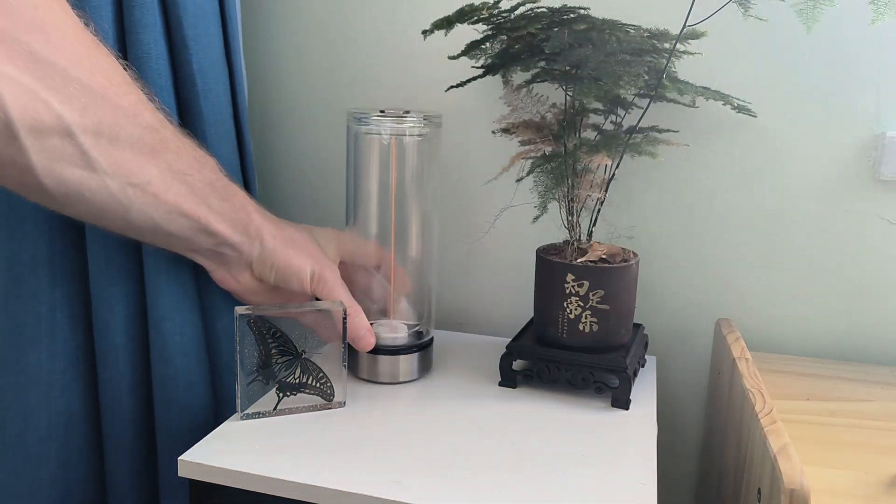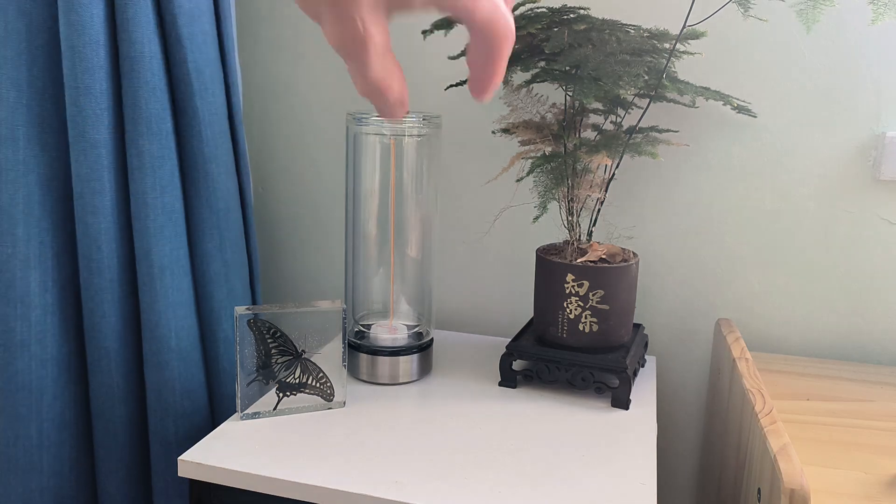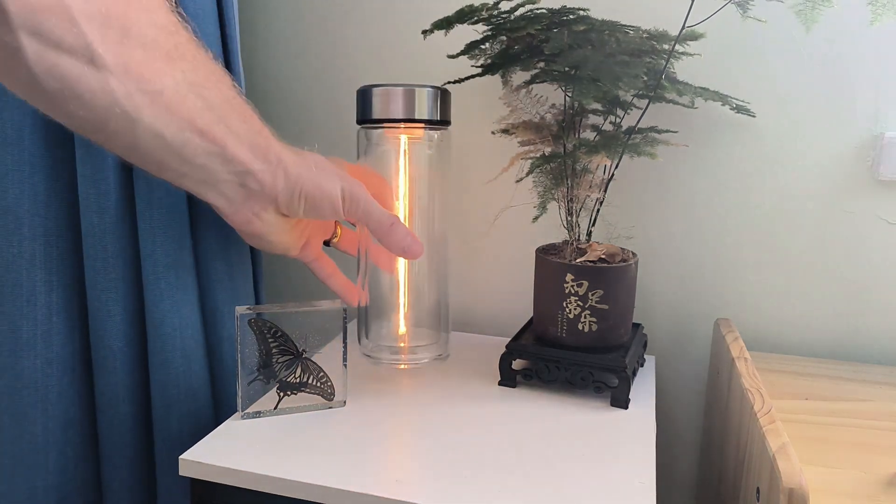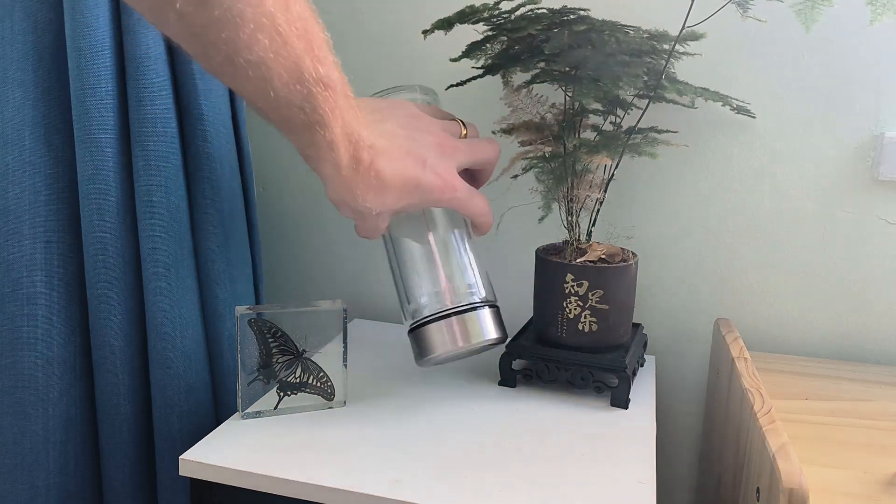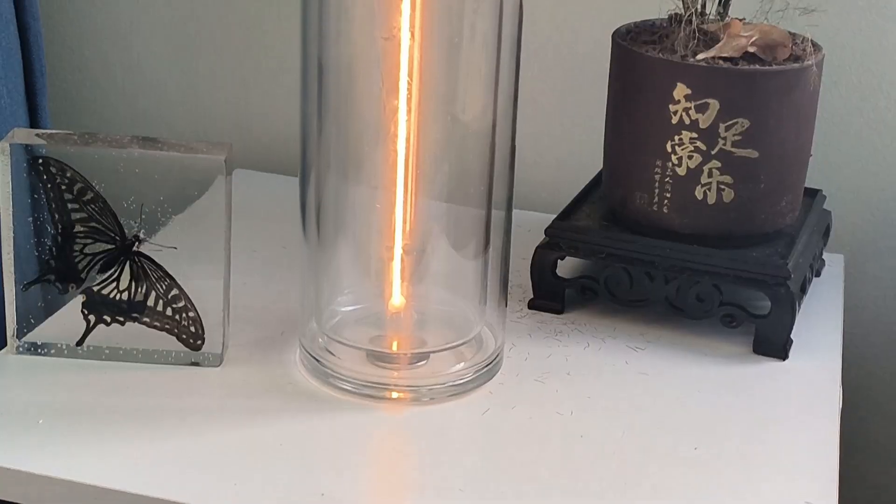In this video I'm going to show you how you can make this nifty little night light where it's just a light inside a bottle and when you flip it it turns on or off.